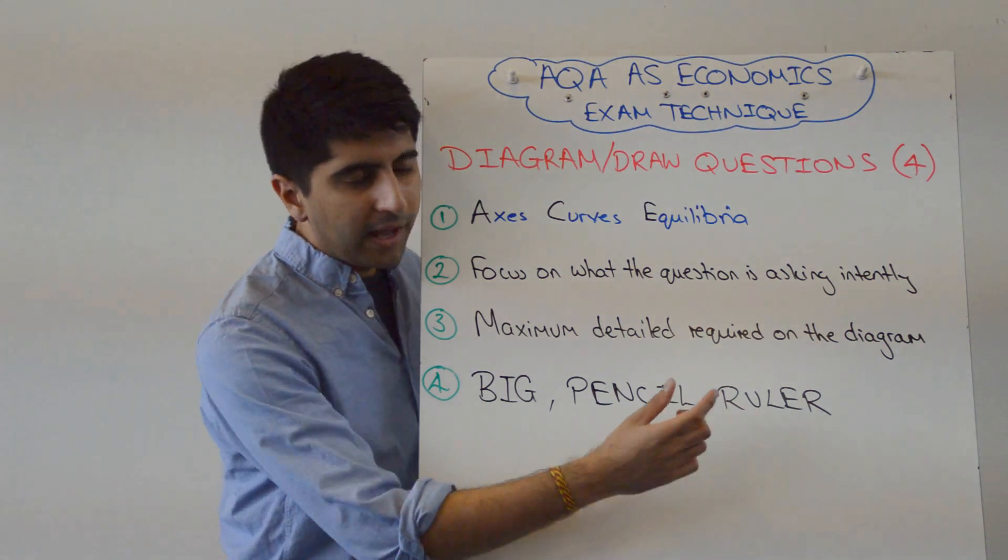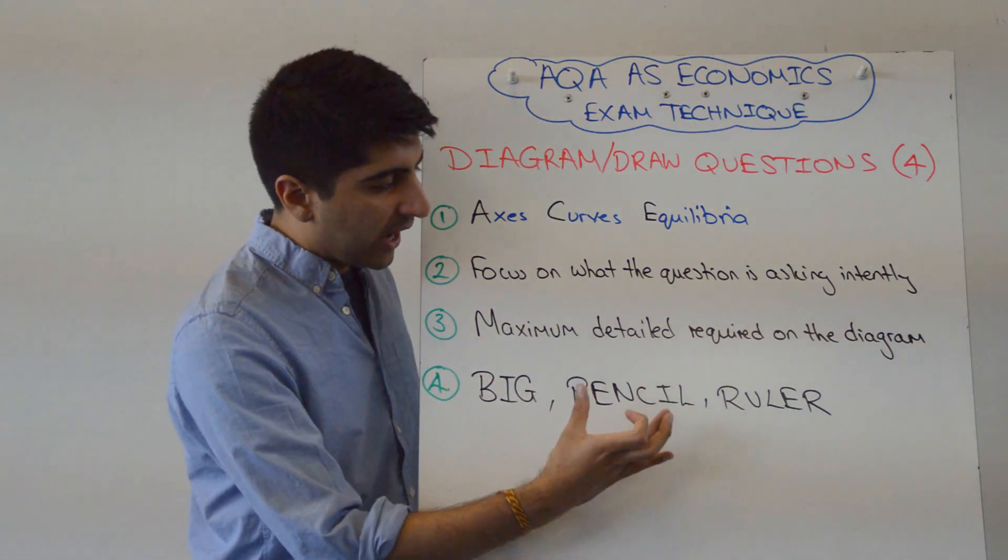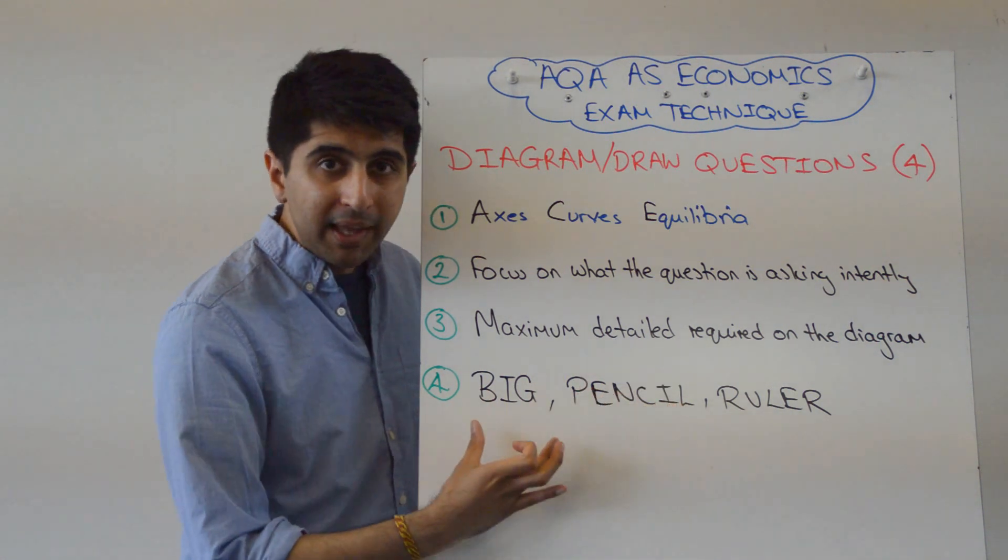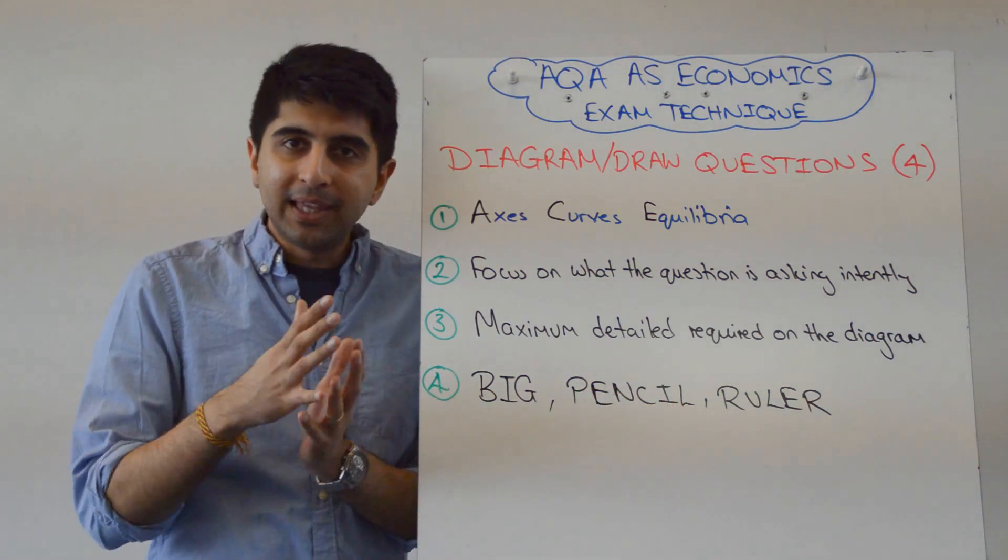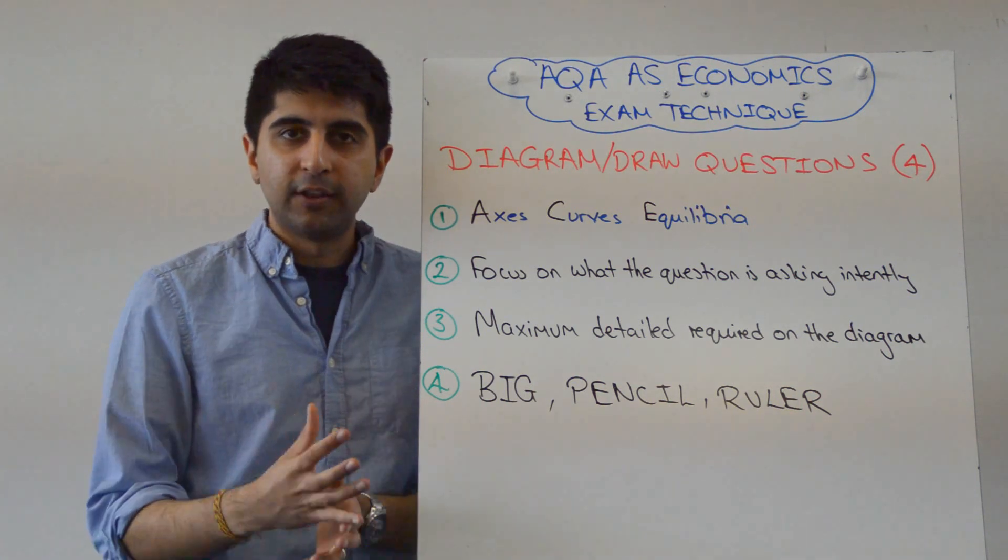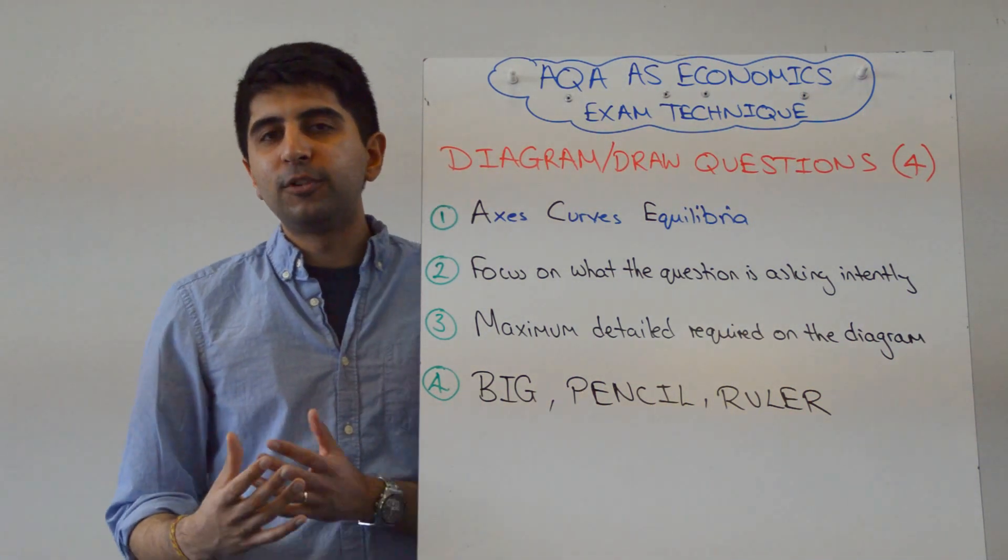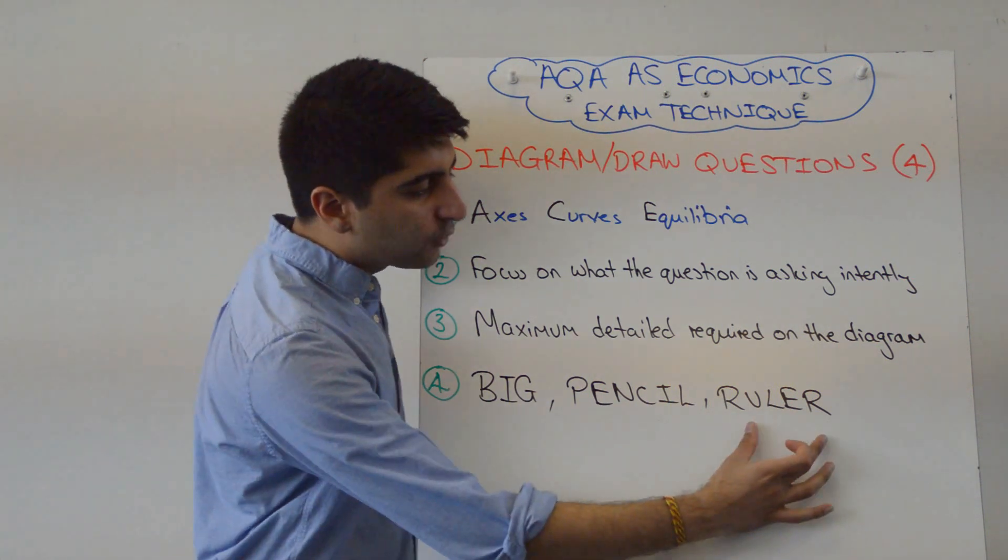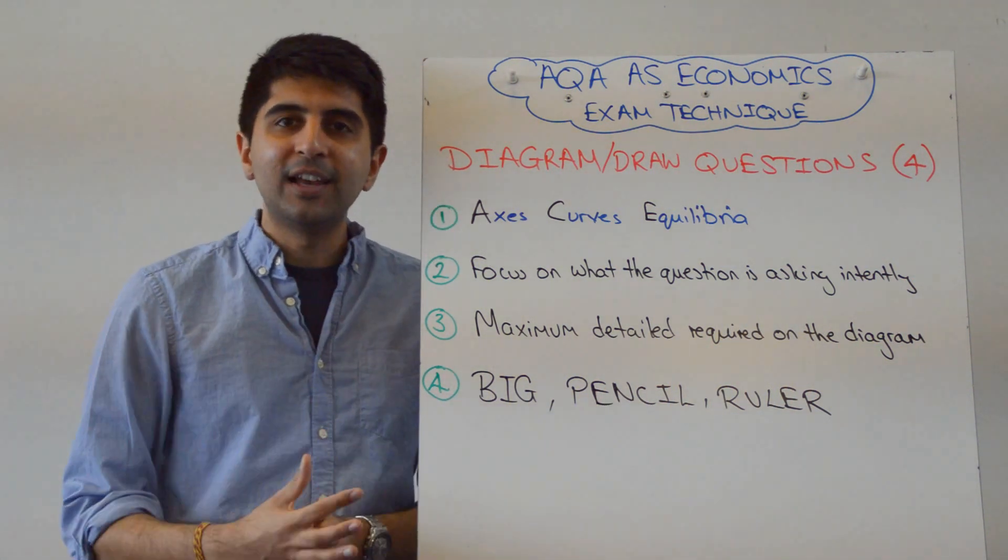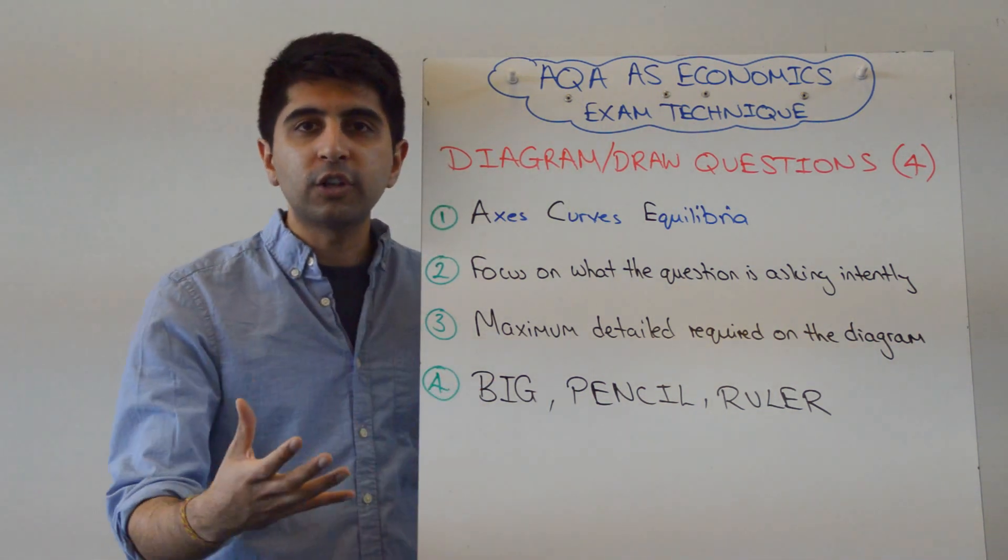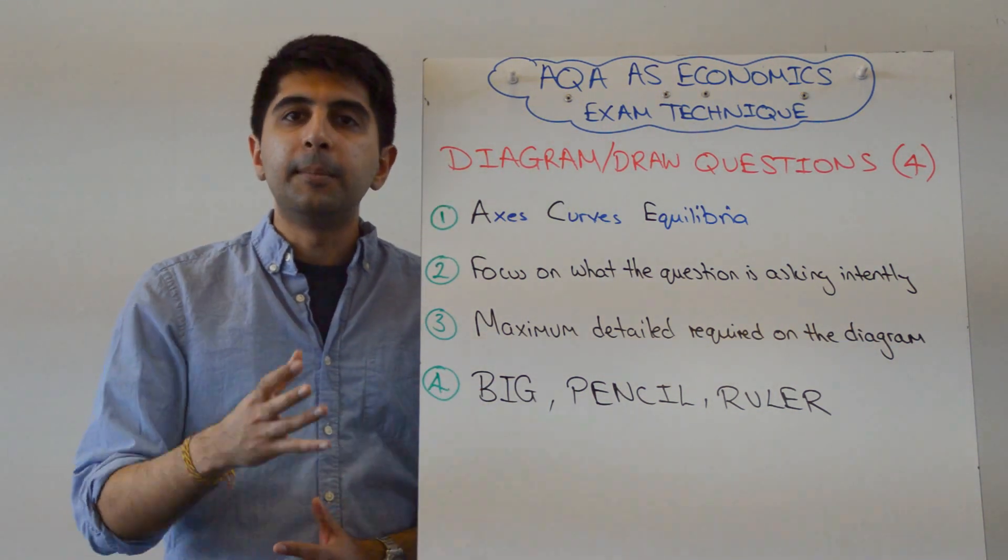And lastly, an examiner will always check and want diagrams to be drawn big. Normally in the paper you'll be given the axes, you'll be given the space to draw it in, so you're forced to draw it big. But examiners like diagrams to be drawn in pencil. They do. And to be drawn using a ruler. It just adds to good presentation. So use a pencil, use a ruler. It will show up when it's scanned. Don't worry about it. But do it.